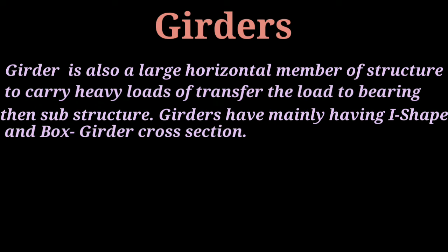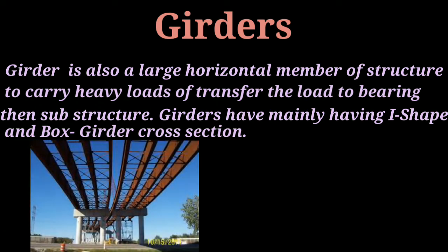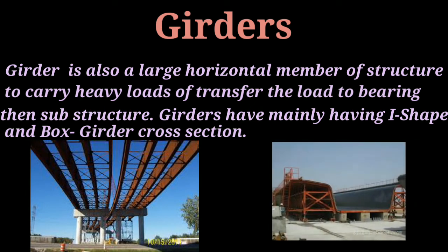Girders with an I-shaped cross-section are called I-girders, and girders with a box-shaped cross-section are known as box girders. Basically, beams and girders have the same principles: they resist bending moment, shear force, and provide torsional resistance. So we have seen that beams and girders are the same in principle.